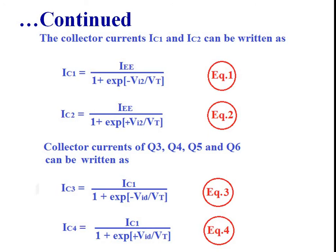The collector currents IC1 and IC2 can be written as: IC1 is equal to IaE divided by 1 plus e raised to minus Vi2 by Vt, and IC2 is equal to IaE divided by 1 plus e raised to plus Vi2 by Vt.